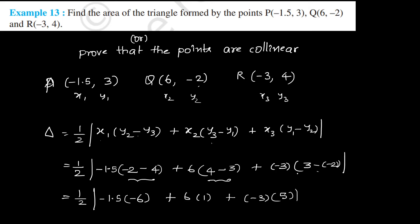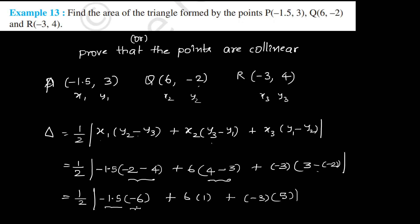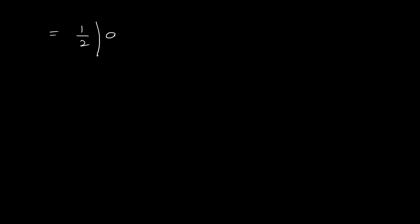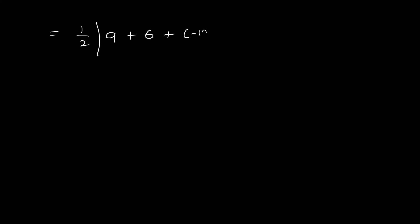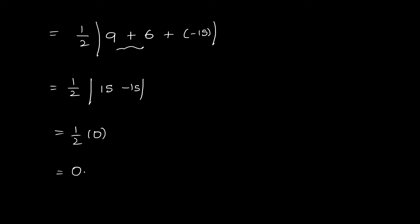So this is equal to (1/2) into: (-1.5) × (-6) = 9, plus 6 × 1 = 6, plus (-3) × 5 = -15. So (1/2) into (9 + 6 - 15) = (1/2) into 0 = 0. Area of triangle is 0. Therefore, the points P, Q, R are collinear.